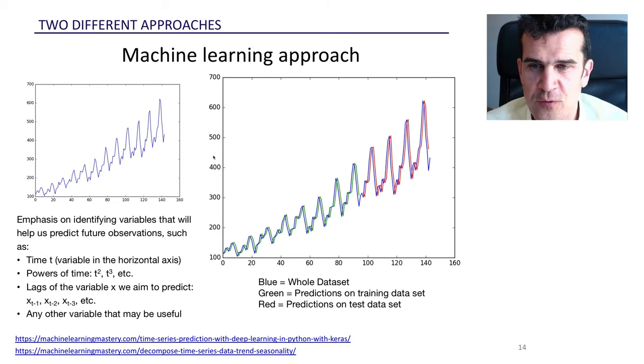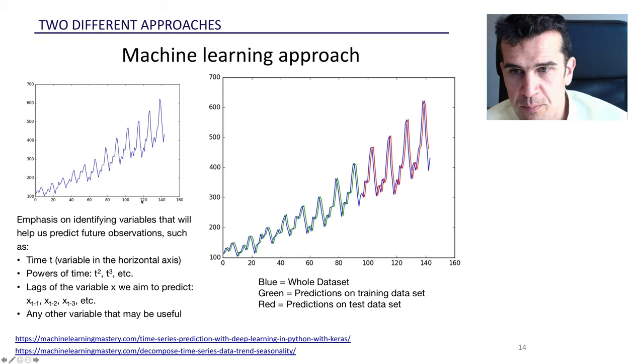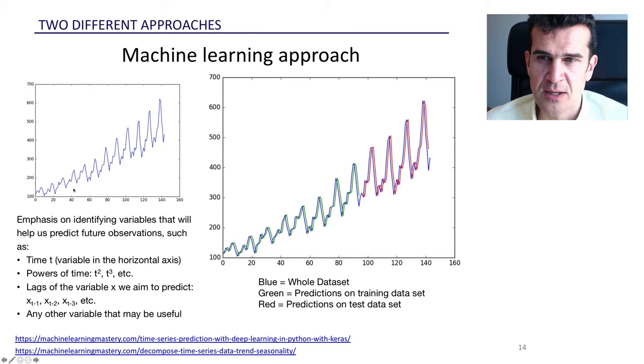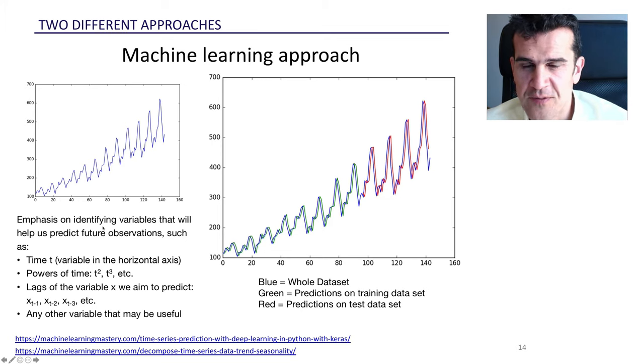Some variables that are often useful in time series are the time that we're plotting here. Remember that the dependent variable we call it x in time series - this may be confusing, but that's the general notation. What we're plotting here is x against time. If we use time as an input variable, that is often useful because it helps us capture linear trends. We can also use powers of time that help us capture more complex trends. Another type of variable that we will see is extremely useful is what is called lags of the variable x that we aim to predict. Lags are the values of the same variable we want to predict but in the past.